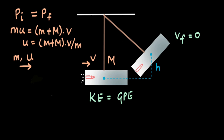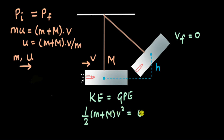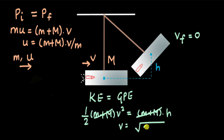We can express this mathematically: one-half times (small m + capital M) times V squared equals (small m + capital M) times g times h. The (m + M) terms cancel, and V comes out to be equal to the square root of 2gh.